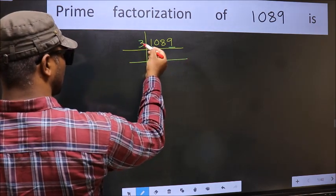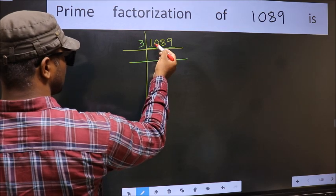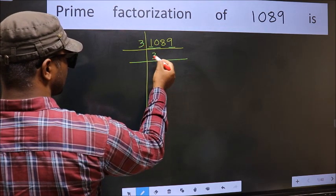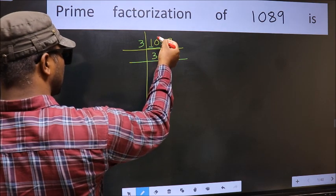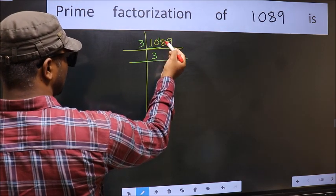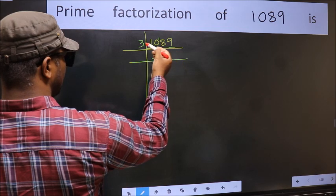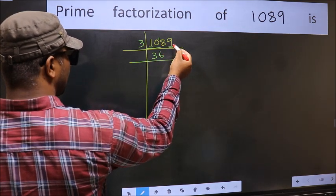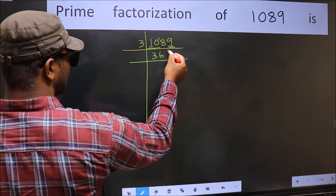First number 1, smaller than 3, so take 2 numbers, 10. A number close to 10 in 3 table is 3 times 3 equals 9. 10 minus 9 is 1, 1 carried forward 18. When do we get 18 in 3 table? 3 times 6 equals 18. The other number 9. When do we get 9 in 3 table? 3 times 3 equals 9.